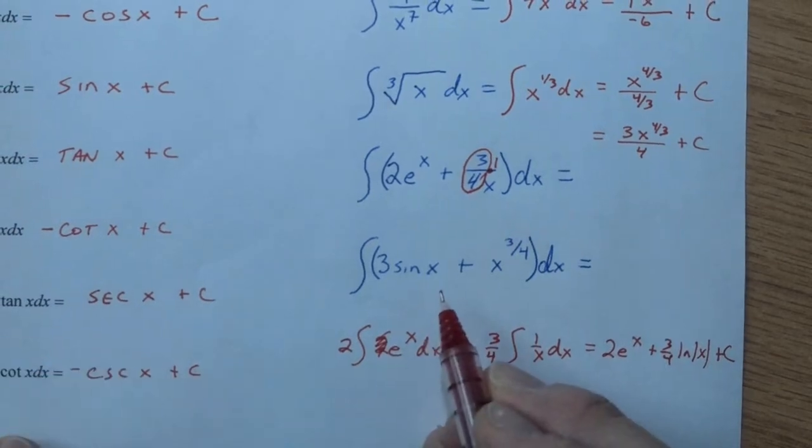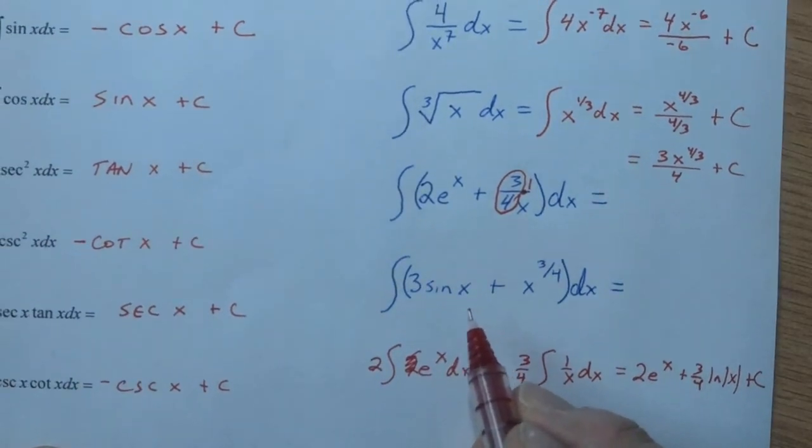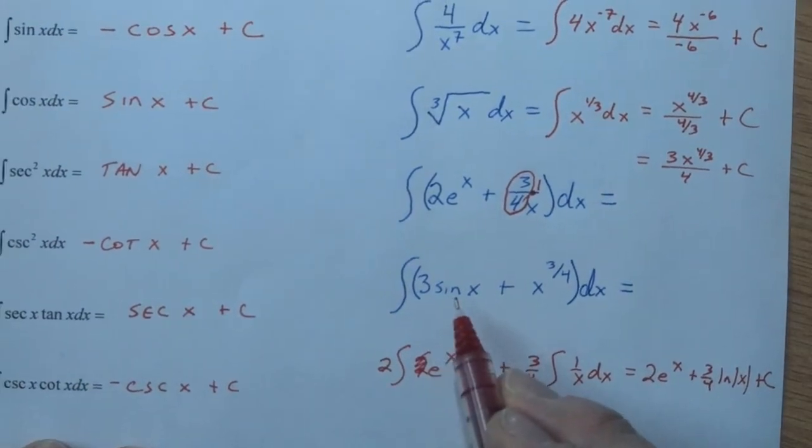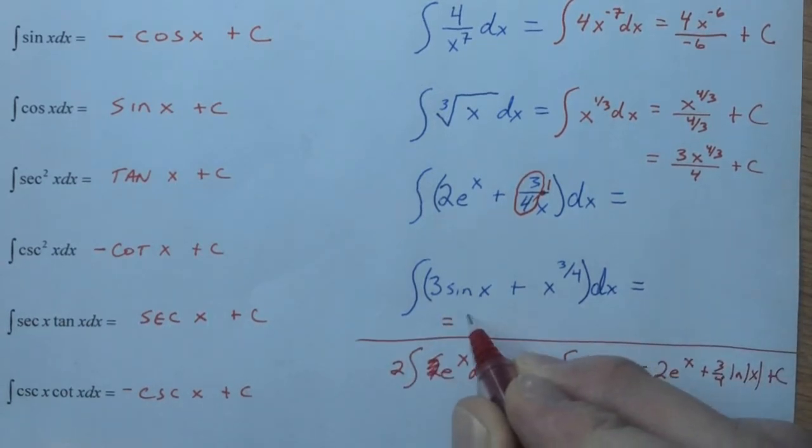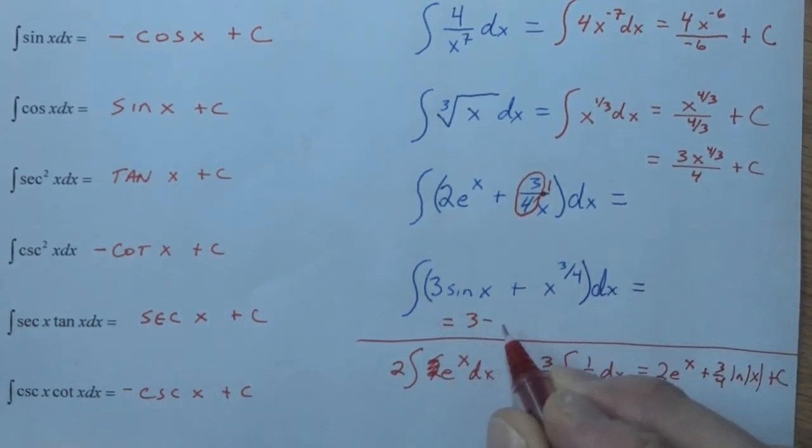And last but not least, we can do a quick trig one. All right, we have 3 times sine of x, well, sine we see goes to negative cosine. Now, just be careful, because some students want to, when they anti-derive this, I'm going to write the wrong version right here. They say, oh, the 3 stays, and then sine goes to negative cosine x when I anti-derive it.